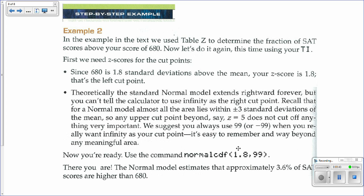How likely is it that something will be above 1.8 standard deviations above the mean? That or above. Or if you're doing below, you would do negative 99 comma and then negative 1.8 or whatever the Z score is.